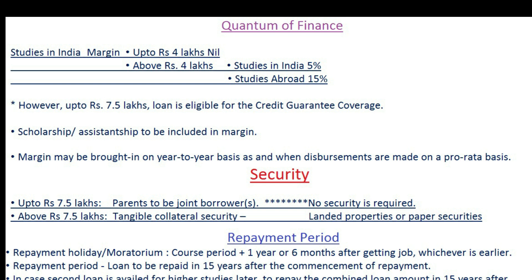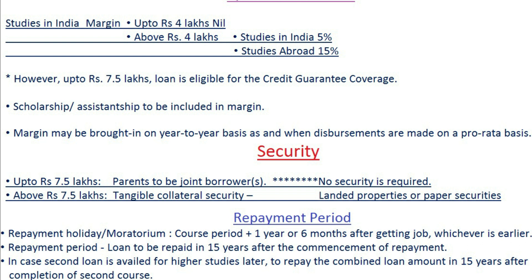Quantum of finance: for studies in India up to rupees 4 lakhs, margin is nil. Above rupees 4 lakhs for studies in India, margin is 5%, and for studies abroad, margin is 15%. Loans up to rupees 7.5 lakhs are eligible for credit guarantee coverage. Scholarships and assistantships are to be included in margin on a pro-rata basis as disbursements are made. Security: up to rupees 7.5 lakhs, parents to be joint borrowers with no collateral required; above rupees 7.5 lakhs, tangible collateral security like land, property, or paper securities is required.